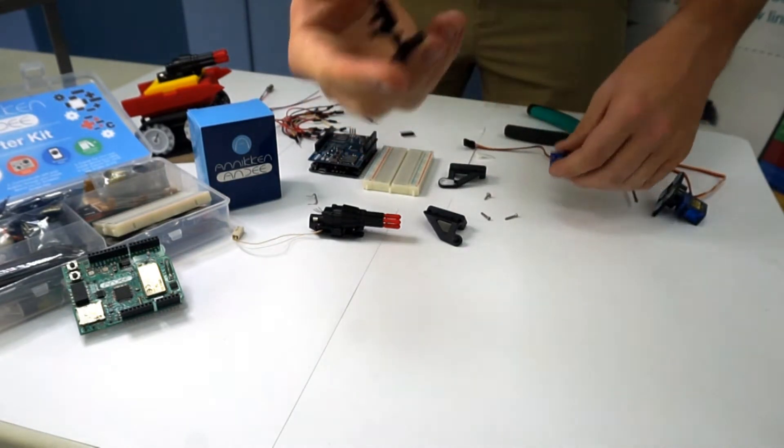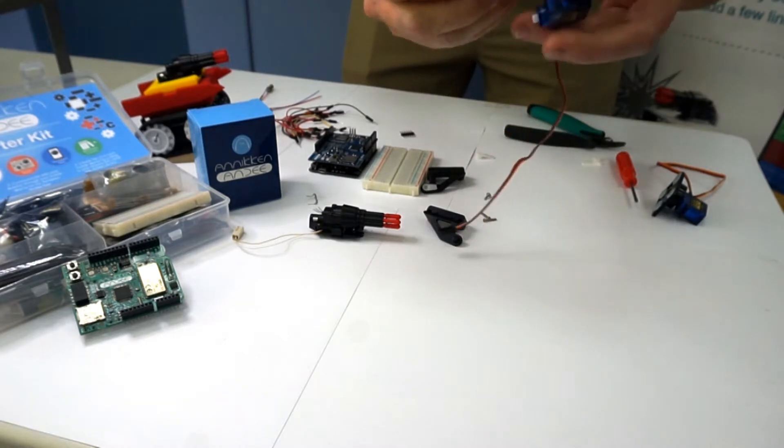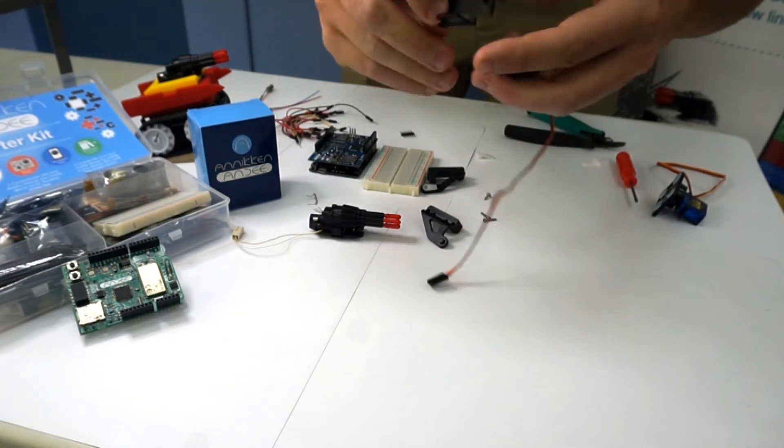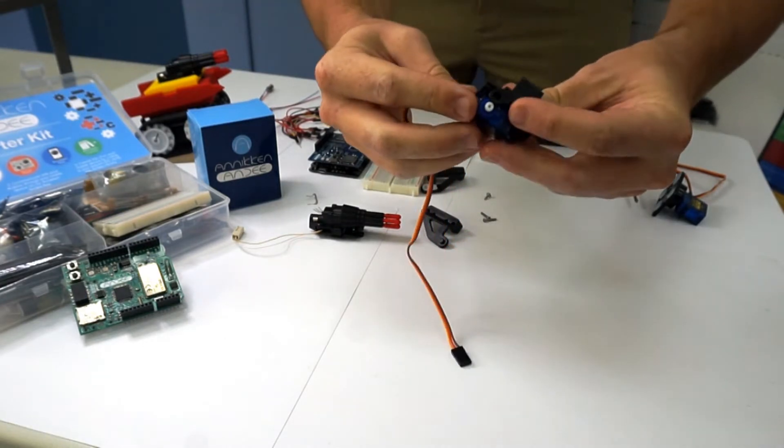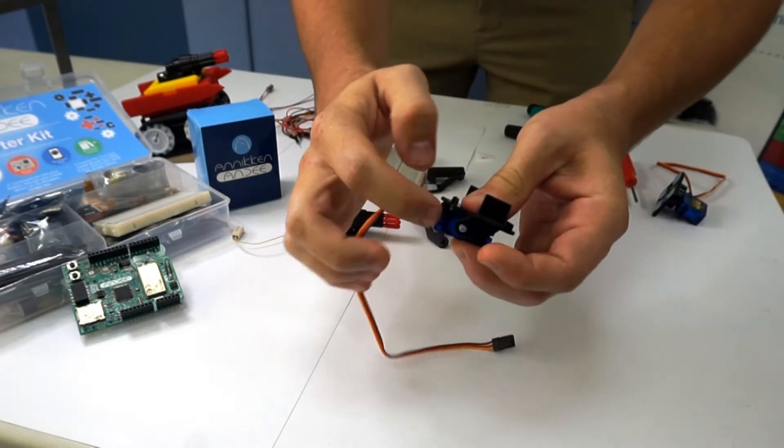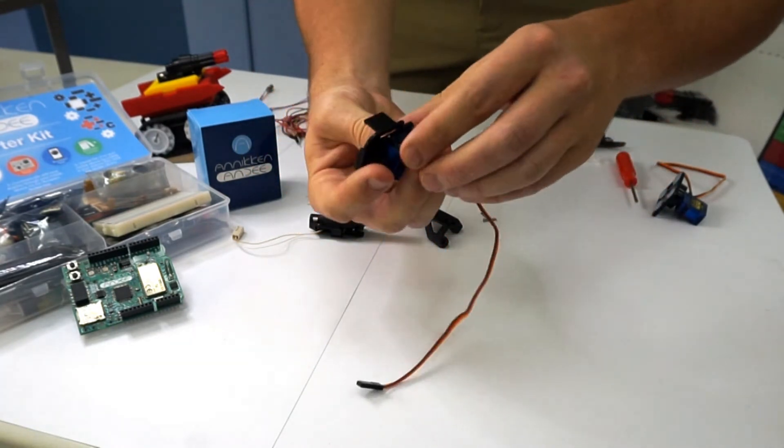The next part is attaching the top. So what you first want to do is line this up like so, so that the screw terminals are lined up. So you can see from here as well as back here.